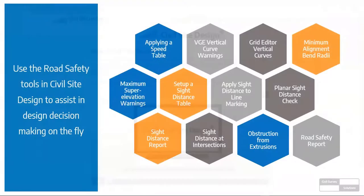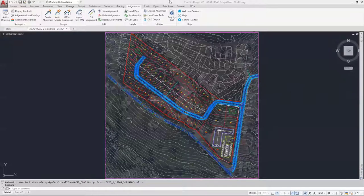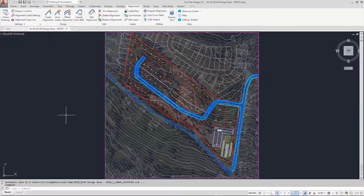Thanks for that, Jonathan. Today's session we're going to be looking at some of the road safety tools available in Civil Site Design. There's a variety of tools depending on the type of project - a local area road won't necessarily require super elevation and speed checks, whereas a highway would. I'll jump straight into the project on the Civil Site Design Plus platform, where all the usual controls are present.